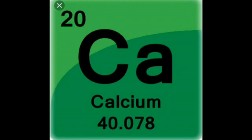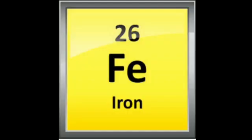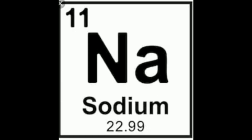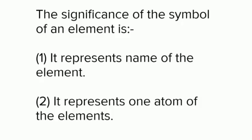We can also have the Latin names of elements. For example, iron — the Latin name is ferrum and the symbol is Fe. Next is sodium — the Latin name is natrium and the symbol is Na. The symbol of an element represents the name of the element and one atom of the element.